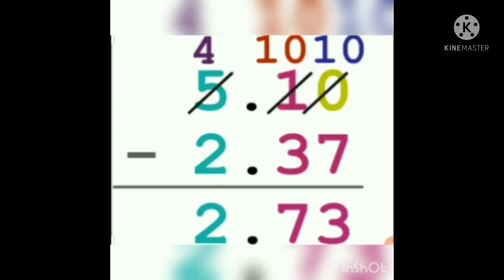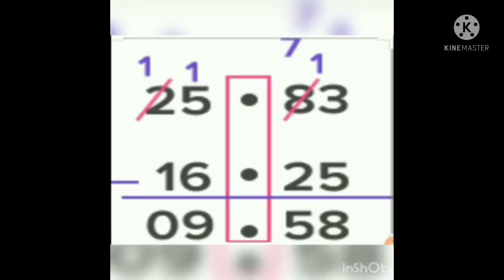To check if your subtraction is correct: add the answer and the smaller number — you should get the larger number. So 7 plus 3 is 10 — write 0, carry 1. Then 7 plus 3 is 10, plus 1 is 11 — carry 1. Then 2 plus 2 is 4, plus 1 is 5. One more subtraction example: 25.83 minus 16.25. Borrowing from 8 — 8 becomes 7, 3 becomes 13. Then 13 minus 5 is 8, 7 minus 2 is 5. Borrowing again: 2 becomes 1, 5 becomes 15. Then 15 minus 6 is 9, and 1 minus 1 is 0.